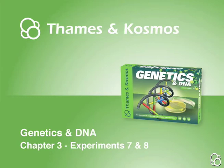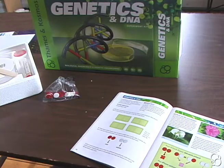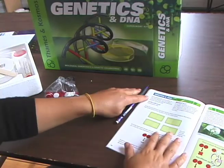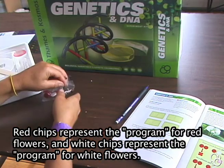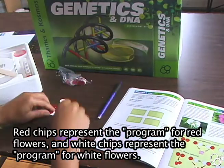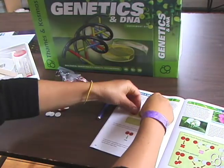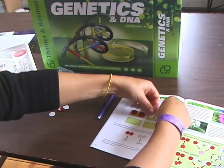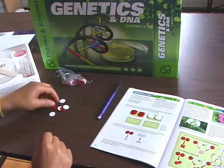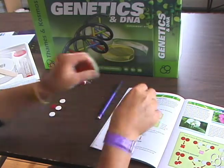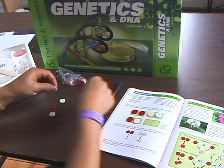Now we're going to do experiment seven: Mendel and the Rules of Heredity. You want to make all possible combinations of chip pairs in the four boxes below. So let's get some chips. One combination is red with red, another is white with white, another is red and white, and another is white and red.